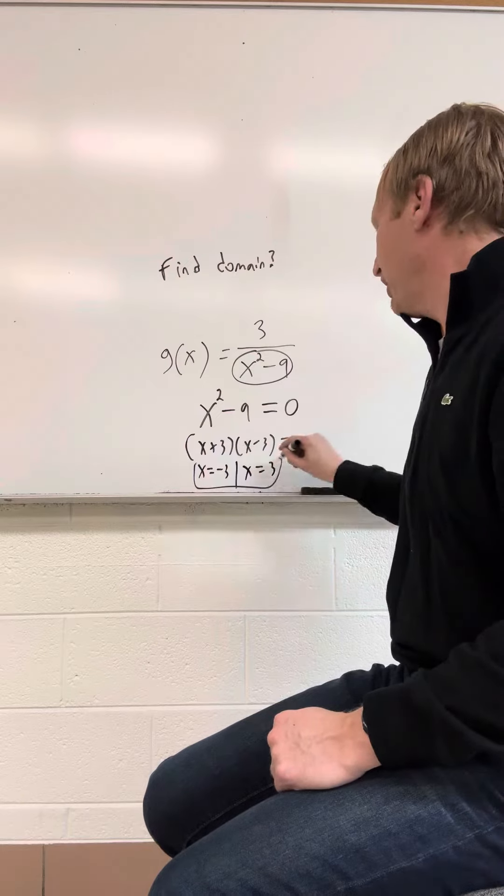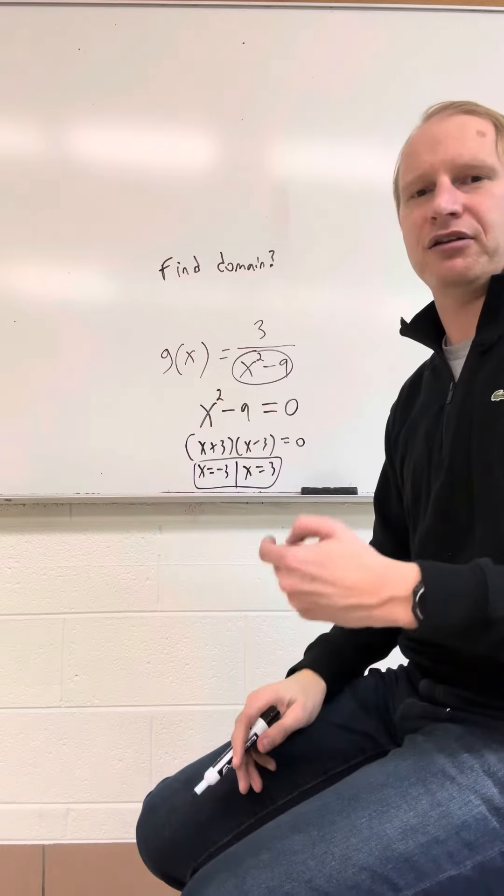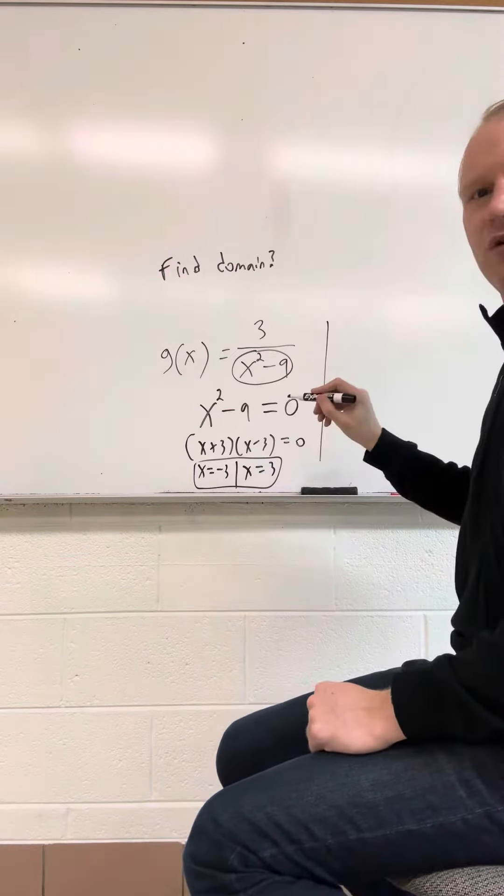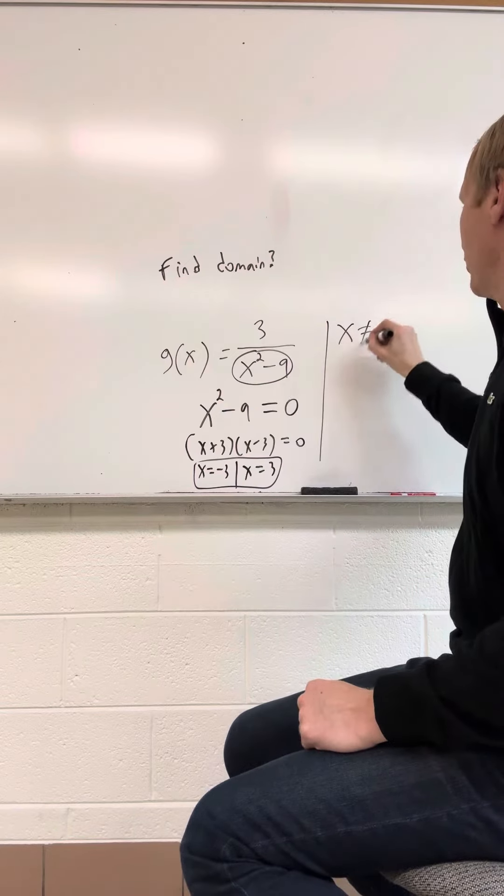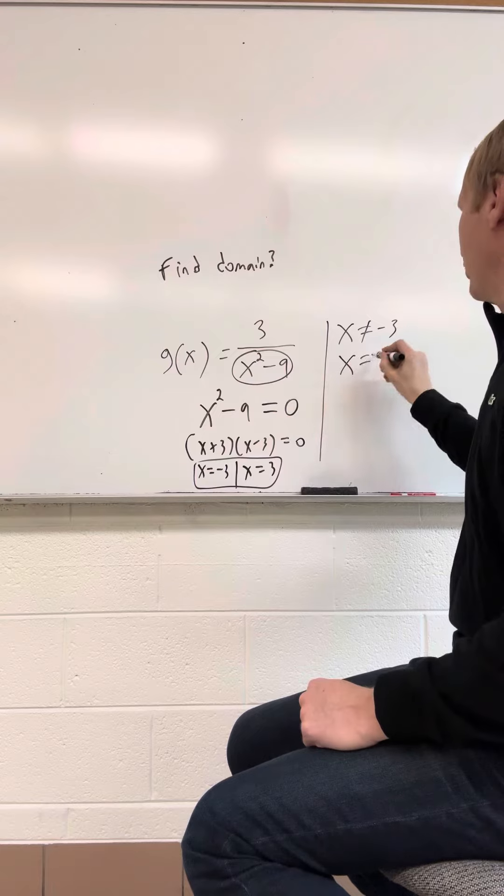So these are the two values that make this bottom zero. So those are the two values that the function cannot take on. So we would say here for our answer, we would say x cannot equal negative 3, and we would say x cannot equal 3.